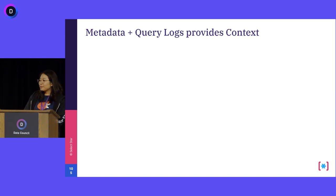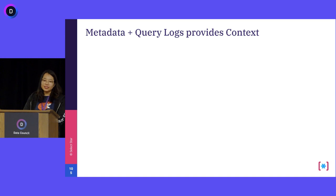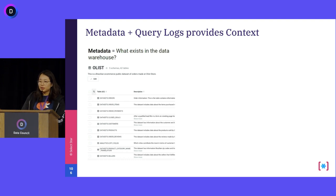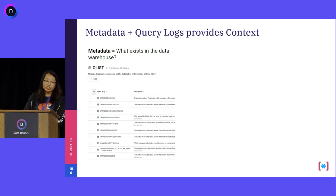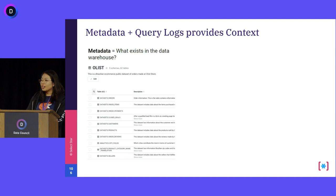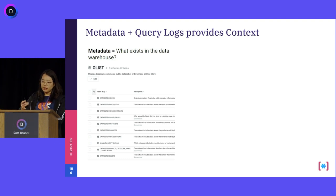As data practitioners, you're all very much aware that databases track everything in logs. At SelectStar, we use metadata — basically your information schema and systems tables — which tells us what exists inside your data warehouse: where things exist, what the structure looks like, your databases, schemas, tables, and columns, how many there are, and where they are located. It's kind of like a map of what the data is — let's call it our local map.